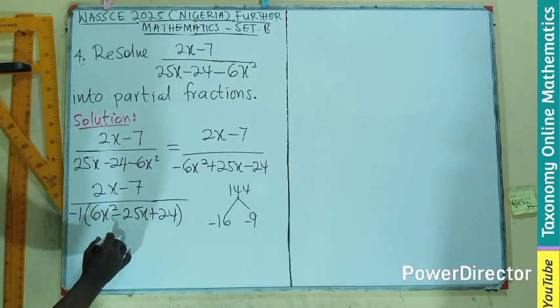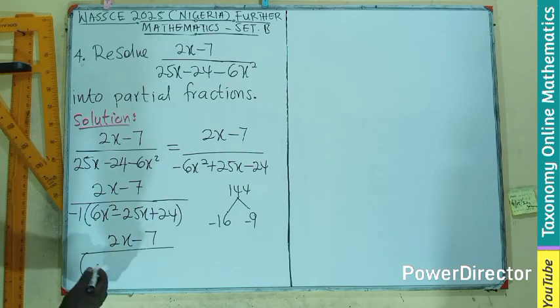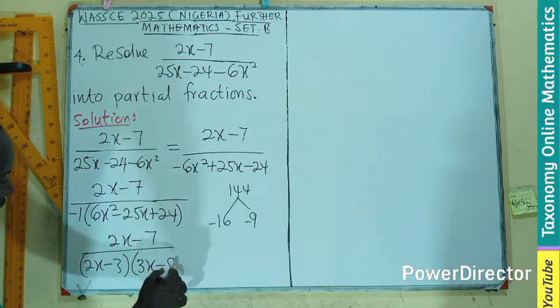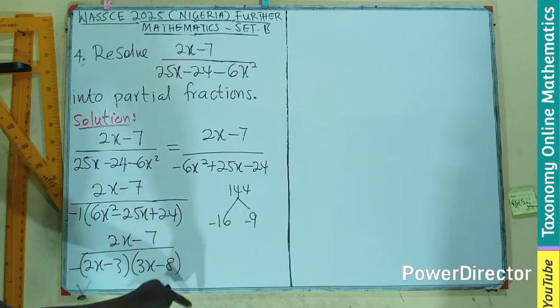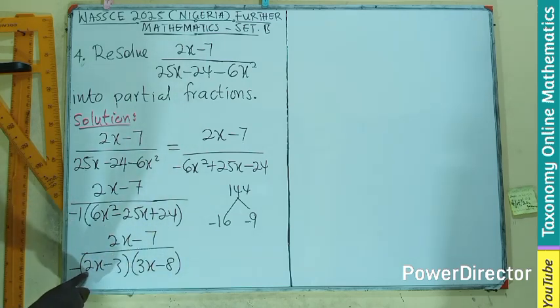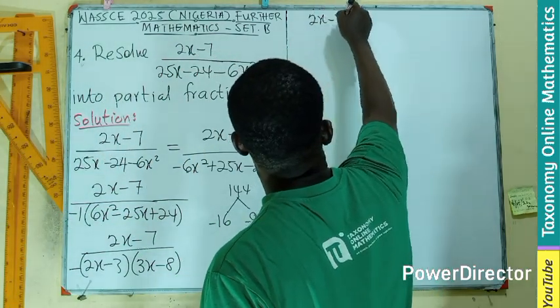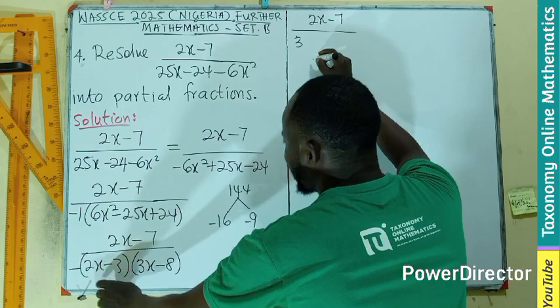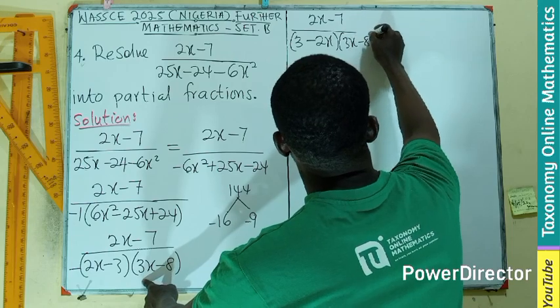Let's lift this and replace our quadratic term here and continue. I am going to have my 2x minus 7 divided by, into brackets, the first thing we have was 2x minus 3 and 3x minus 8. But remember, there is a minus 1 here. If this minus is multiplying all of them, it will be negative 2x plus 3. I can rewrite this as 2x minus 7 divided by 3 minus 2x times 3x minus 8.